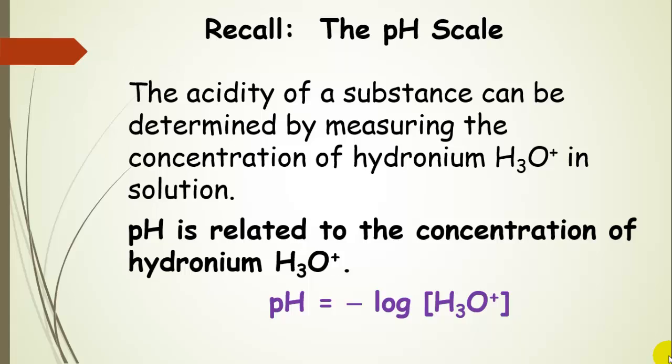We can relate the acidity of a substance to the concentration of hydronium in solution. pH is calculated by taking the negative log of the hydronium ion concentration.